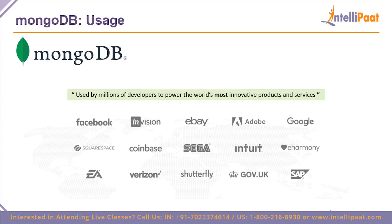Multiple Fortune 500 companies use NoSQL technologies on a day-to-day basis. According to MongoDB, it has been used by millions of developers to power the world's most innovative products and services. Companies like Facebook, eBay, Adobe, Google, Squarespace, Sega, eHarmony, the UK government, and SAP all go on to use MongoDB.